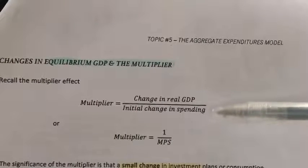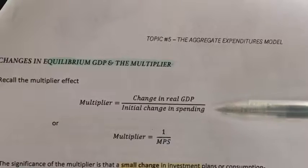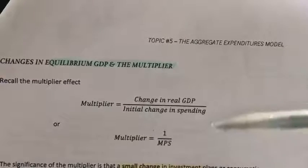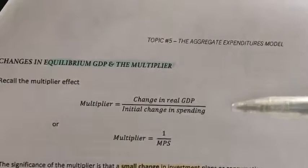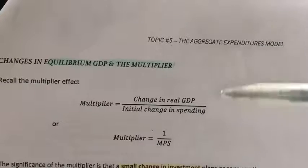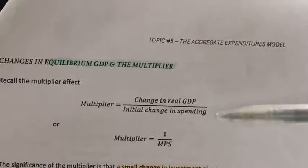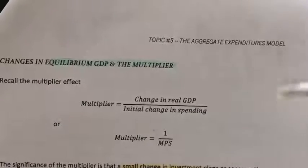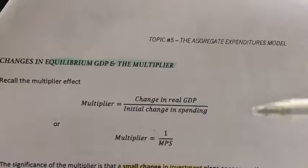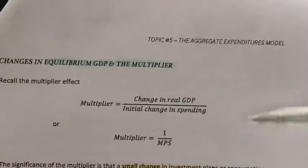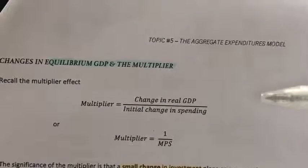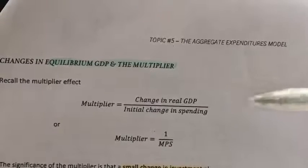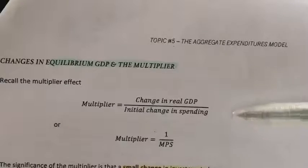Now, spending here can be any of the component of aggregate expenditure. It could be C, it could be IG, it could be G or XN. Okay, but remember, since now we are still in the situation where the economy is private and closed, meaning we're only focusing on two groups, which is C and IG.